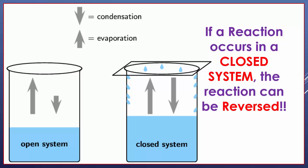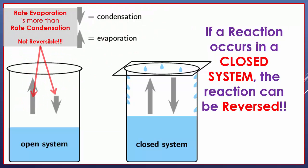Let's look at this diagram. On the left, we have a beaker with water in it — an open system. On the right, we have the same size beaker with water but with a lid on top. On the open system there's less water, because the rate of evaporation is greater than the rate of condensation. That water is leaving and going out into the universe as water vapor, so the mass is being lost.